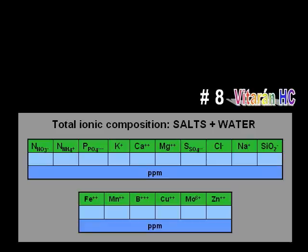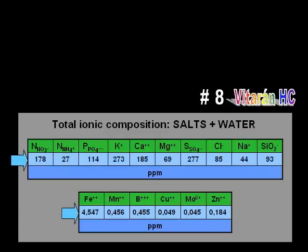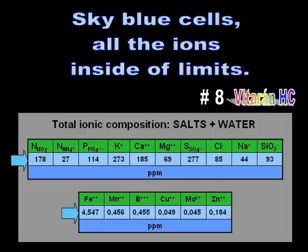The most important aspect is to establish if the ionic content of the formula is appropriate for growing our particular plants. If all the central cells of this chart are sky blue, then all element ions are inside the range for nutrient solutions. Therefore, this formula can be used with absolute certainty in soilless culture. Let's see how to do it.